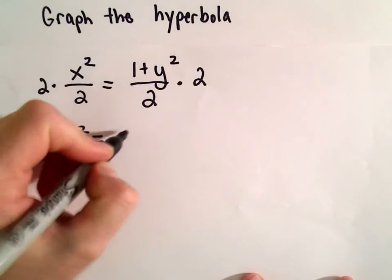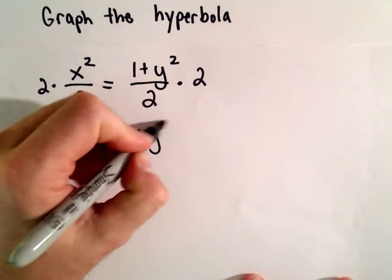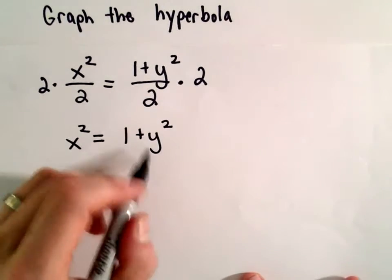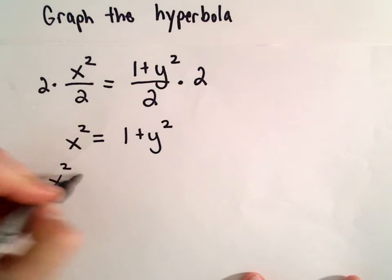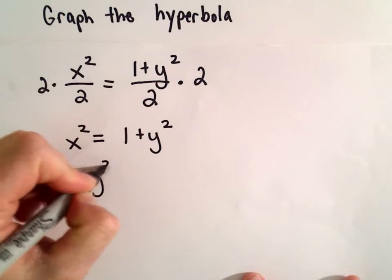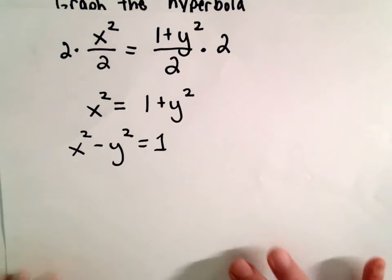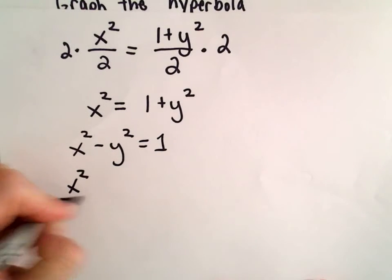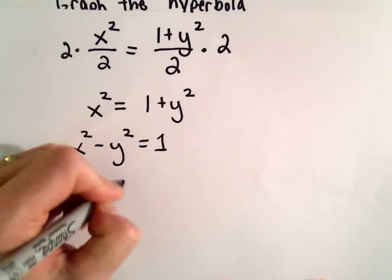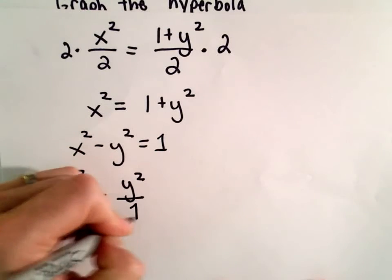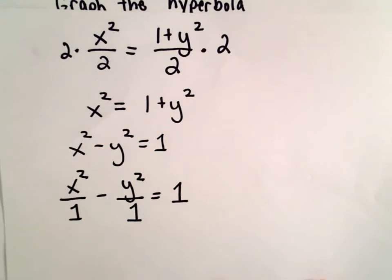Same thing on the right, the 2s will cancel out. We'll have 1 plus y squared. And now if we subtract y squared from both sides, we'll get x squared minus y squared equals 1. And we could even write this as x squared over 1 minus y squared over 1 equals 1.